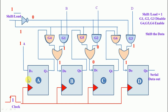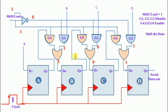Now we change the control signal to 1, which enables G4, G5, and G6. We then apply the clock pulse. The data shifts: the bit at the first stage moves to the second, the bit at the second moves to the third, the zero moves along, and the bit at the third stage moves to the fourth, shifting all data toward the serial output.